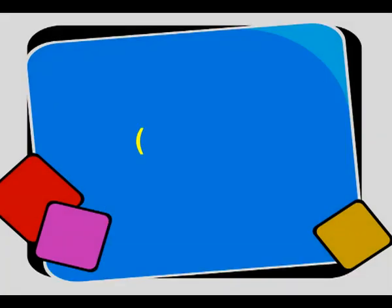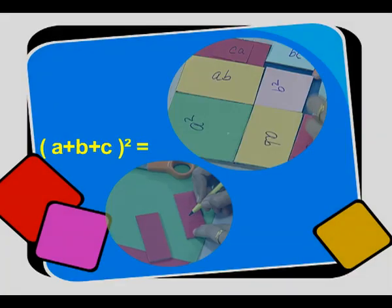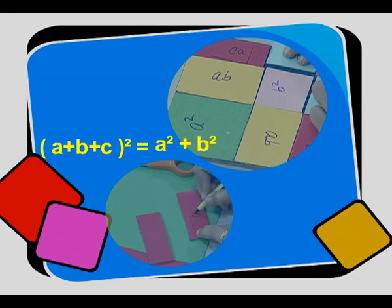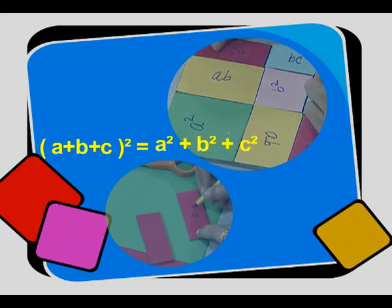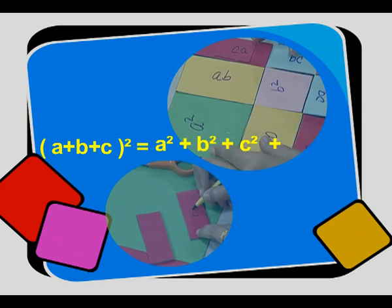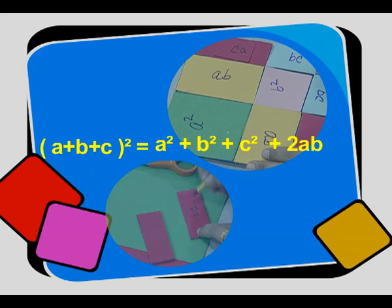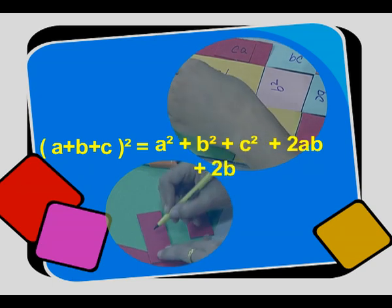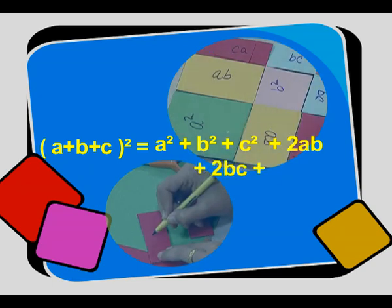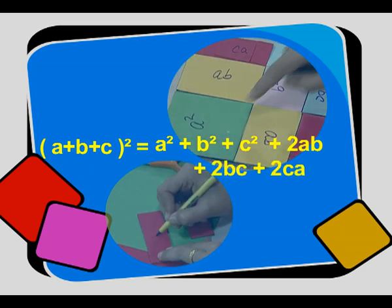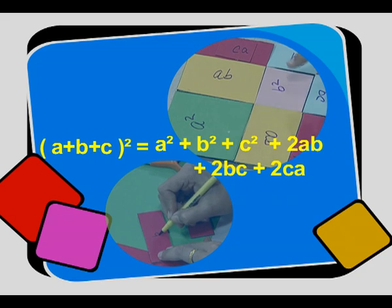We will write the algebraic identity: (a + b + c)² is equal to a² + b² + c² + 2ab + 2bc + 2ca.